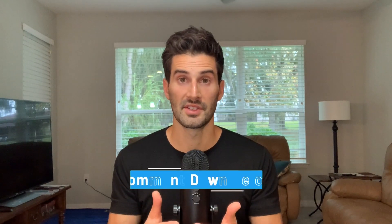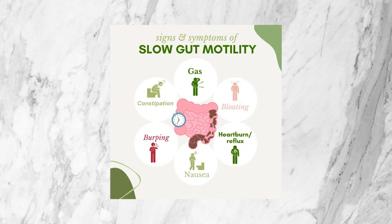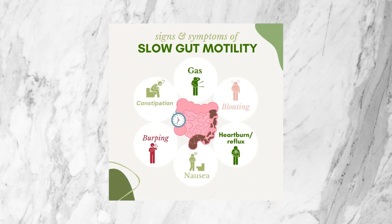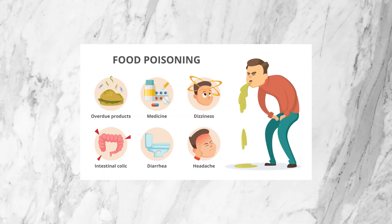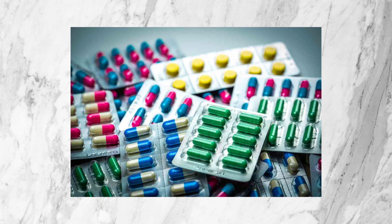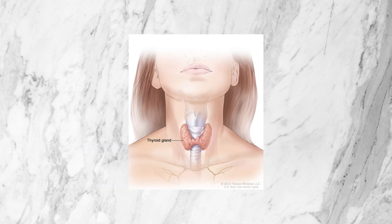In terms of causes of intestinal methanogen overgrowth, for many people slow gut motility is the biggest causative factor in developing SIBO or IMO. There are a ton of potential root causes that can lead to this slow gut motility. Some include food poisoning, which is a major one, chronic stress, antibiotics, diabetes, and having hypothyroid. This is by no means a complete list, but just a few examples of what can contribute to slow gut motility.